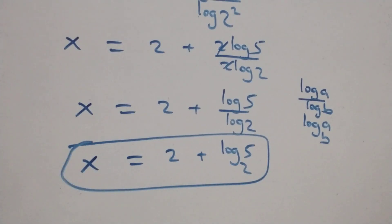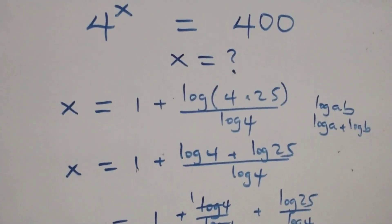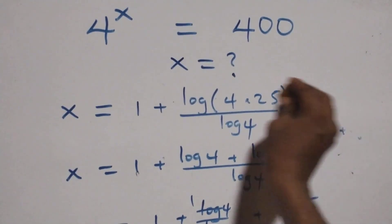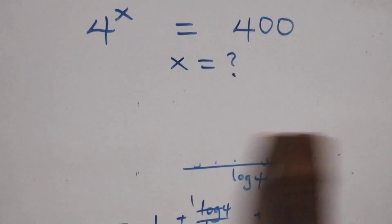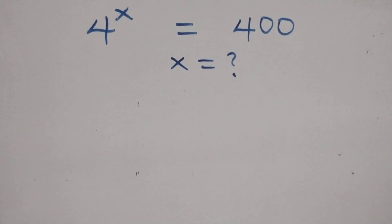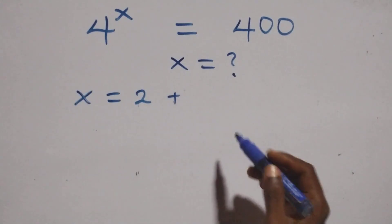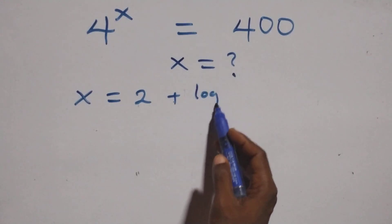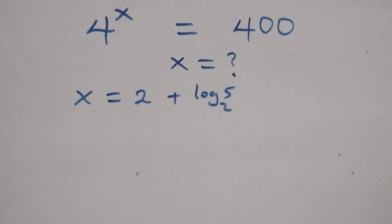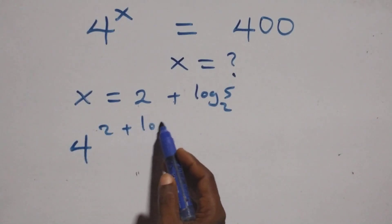Then let's check if this satisfies the original equation. We substitute the value of x, which is x equals 2 plus log 5 base 2. So we have 4 raised to the power of (2 plus log 5 base 2) equals 400 on this side.